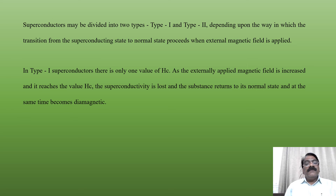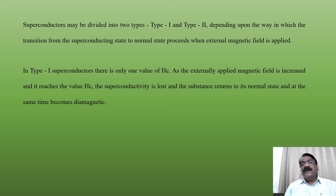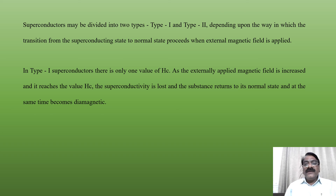Superconductors may be divided into two types, type 1 and type 2, depending upon the way in which the transition from the superconducting state to the normal state proceeds when the external magnetic field is applied. In type 1 superconductors, there is only one value of Hc. As the externally applied magnetic field is increased and reaches the value of Hc, the superconductivity is lost, the substance returns to its original state, and at the same time it becomes diamagnetic.